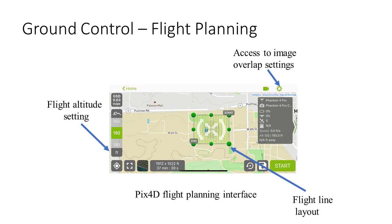Most often we use a flight planning app as part of our ground control station. Flight planning apps like PIX4D Capture let you define the area where you want to fly and set flight parameters like altitude and photo overlap. The app then draws out the flight path — usually a lawnmower pattern — and determines where each image should be taken. The flight plan is uploaded to the drone, and at that point the drone can fly autonomously, though you still have to have your hands on the controls to take over if there are any problems.